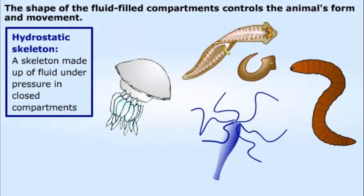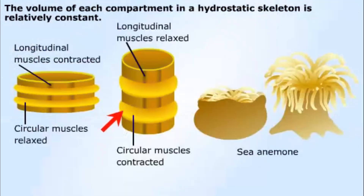Most cnidarians and worms have a hydrostatic skeleton made up of fluid under pressure in closed compartments. Because water can't be compressed very much, the volume of each compartment is relatively constant.